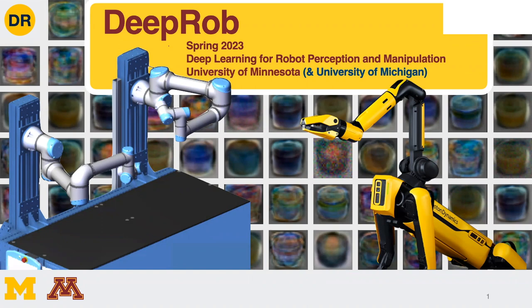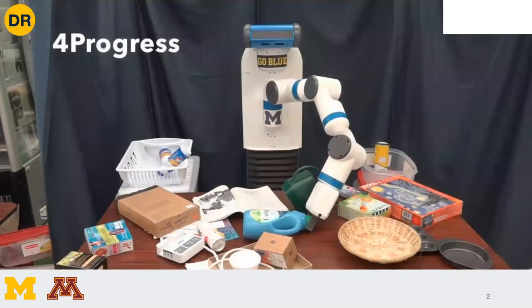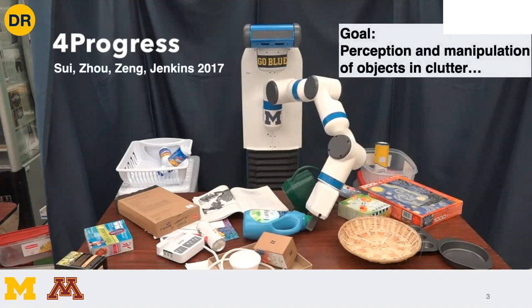Let me start with a motivation. So this is a fetch robot — it has one arm, can move around, and on top is a depth camera. This robot is given a task of perceiving the scene and sorting objects into two different bins based on object identification. Only a subset of objects are of interest; everything else is background or noise — we call that clutter. The goal here is perception and manipulation in clutter.